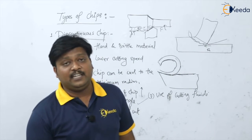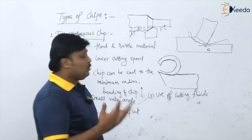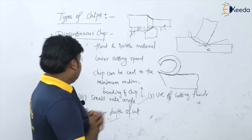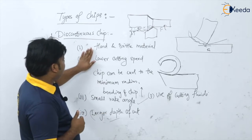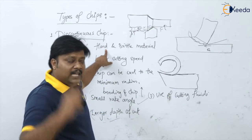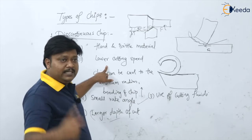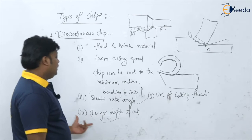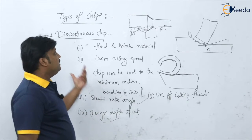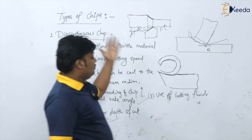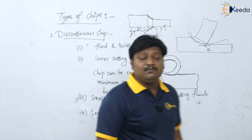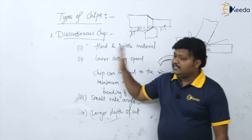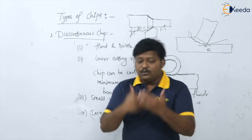So dear students, these are the important factors that are going to affect the production of the chip — whether it is discontinuous or continuous. For discontinuous chip, please remember: first, hard and brittle material should be there; lower cutting speed should be used; small rake angles should be used; larger depth of cuts are again leading to discontinuous chip; and use of cutting fluids is also giving us the discontinuous chip.